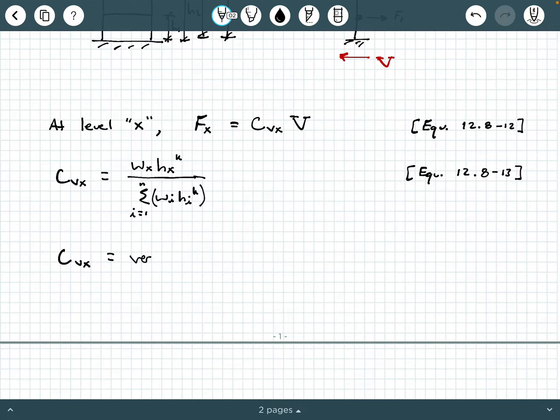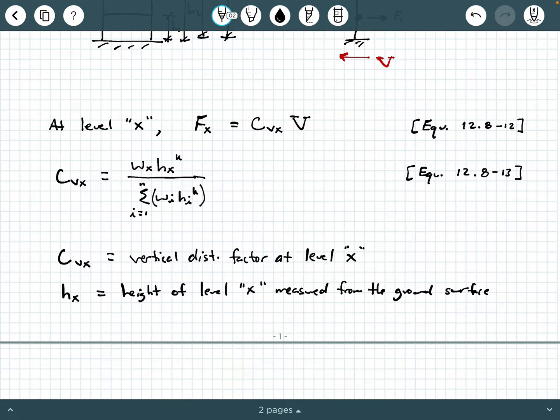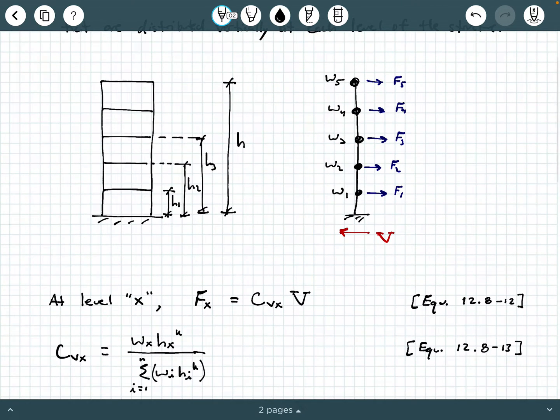Now this equation looks a little bulky, a little intimidating right now. So let's dissect it a little bit and make sure we understand what this is. CVX is called the vertical distribution factor at level X. So level X could be level 1, could be level 2, level 3, whatever. Now what about H sub X? H sub X is the height of level X measured from the ground surface. So if you're interested at H sub 2, H sub 2 is the vertical distance from the ground surface or the base of the structure up to level 2.